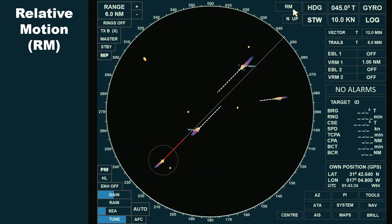The radar orientation remains north-up, in sea-stabilized mode. We're still using a true vector, with a 12-minute time frame, and the trail remains set to true at a six-minute duration.